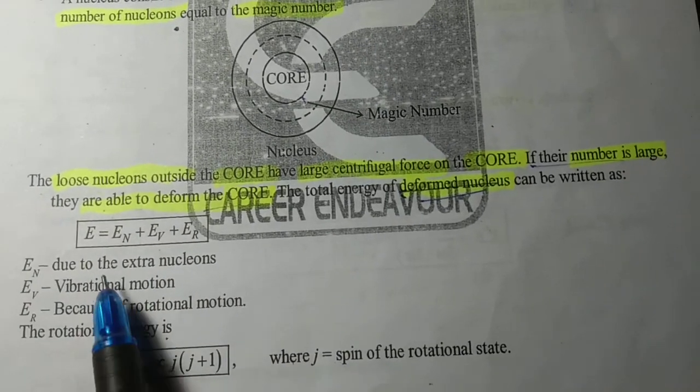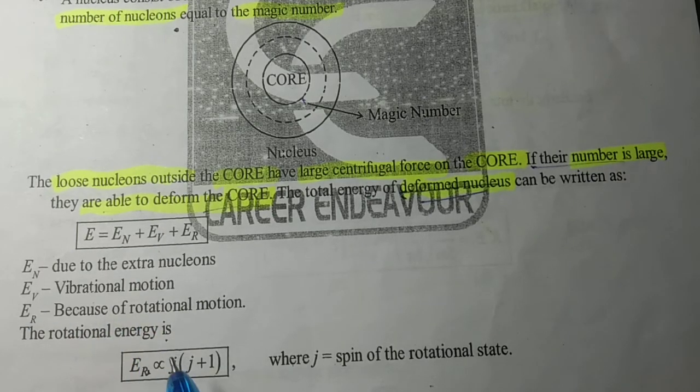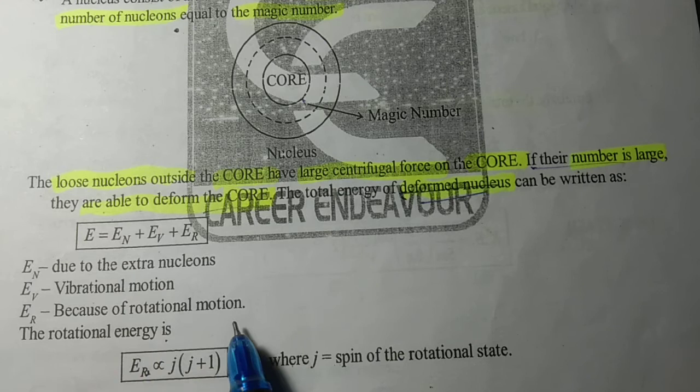Here En is due to extra nucleons, Ev is vibrational motion, Er is because of rotational motion.